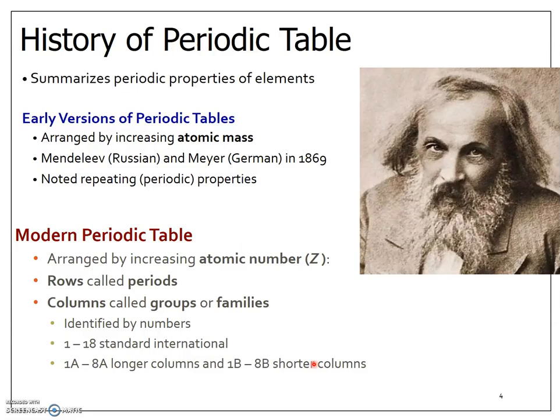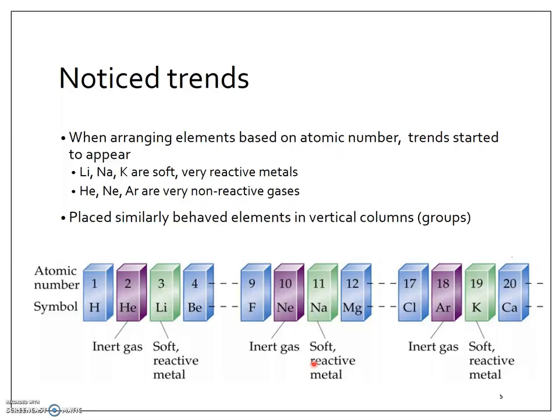So the periodic table we know today, the rows are called periods and the columns are called groups or families. Each period has similar properties or trends, and each column has different properties and trends. For the most part, we will refer to the columns as 1A through 8A, which are the longer larger columns, and then 1B to 8B in the shorter columns.